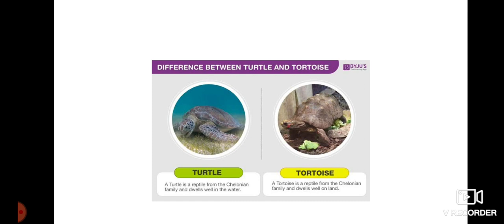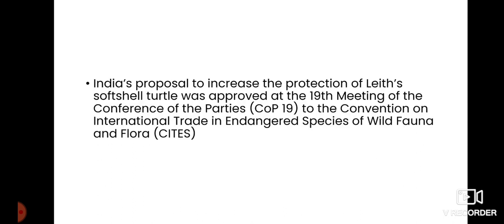These are reptiles which can live both in water as well as land, but specifically turtles are more seen in water whereas tortoises are more seen in land areas. If we observe these creatures, the turtle's shell will be a little softer because they are more in water, and the tortoise's shell will be a little rougher because they walk through rough areas. That is the major difference between these two.